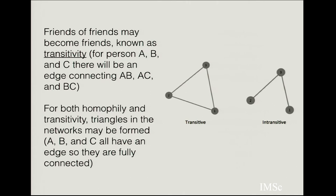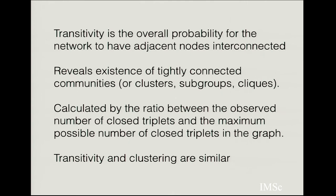There are important properties related to network structure. One is called transitivity: for persons A, B, and C, if A is connected to B and A is connected to C, there is an enhanced probability that B and C will also be connected to each other. Both homophilia and transitivity show a tendency to form triangles. An intransitive network is one where the connection of node 3 to node 2 and node 3 to node 1 has nothing to do with the probability that node 2 and node 1 are connected.